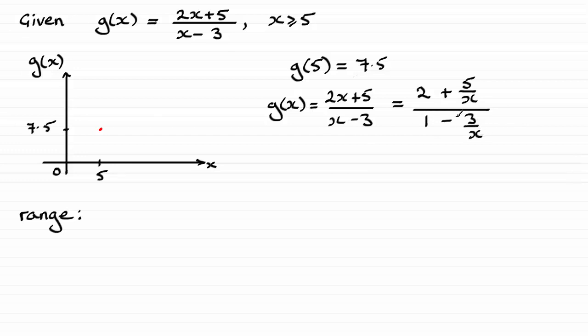And changing it into this style makes it a lot easier to see what happens as we let x get larger. So I'm just going to write this in here as g(x) for x tending to plus infinity.